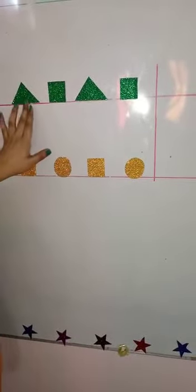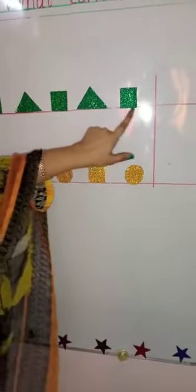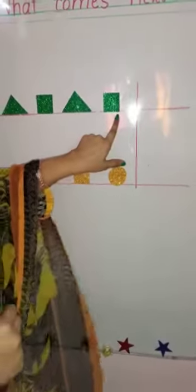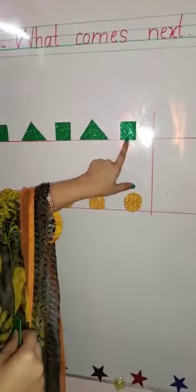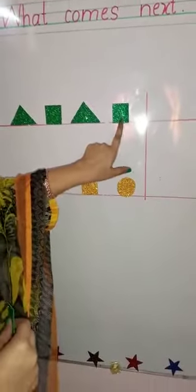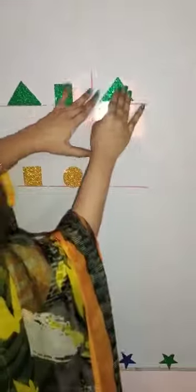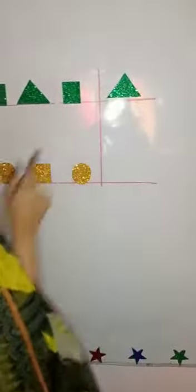So after the square what we have, we have a triangle. So the last shape that we have, it is a square. So what we will draw after the square, it has to be a triangle. I am pasting it but you will draw it.